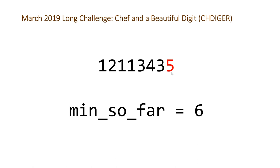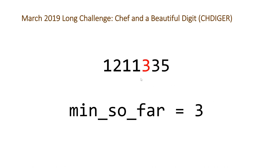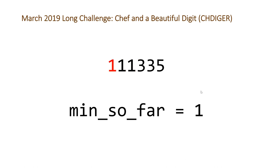We look at the next digit 5 — it's not greater than the minimum, so we reset the minimum to 5. Now anything greater than 5 gets erased. We move on to 3: not greater than 5, so we reset the minimum to 3. Next is 4: greater than 3, so we erase it. The next digit is 3: we keep it. We move to 1: less than 3, so we reset the minimum to 1. We keep the next 1, erase the 2, and keep the final 1. Once we reach the beginning, we refill the erased positions with our favorite digit 6 — three times in total.